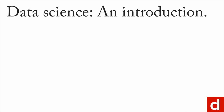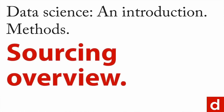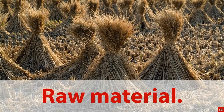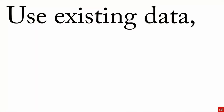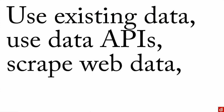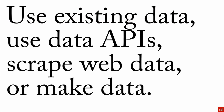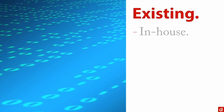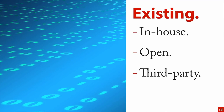The first step in data science methods is sourcing — getting the raw materials for your analyses. You have a few choices: existing data, data APIs, web scraping, or making data. Existing data might be in-house data — your company records — or open data, which many governments and scientific organizations make available to the public. There's also third-party data, which you buy from a vendor — it exists and is easy to plug in and go.